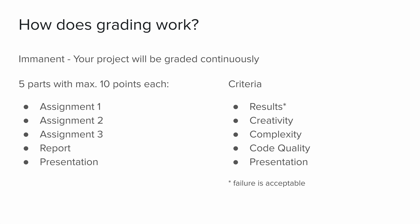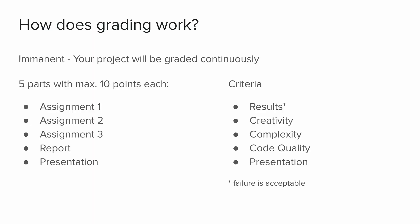How does grading work? This whole lecture is called an imminent lecture, which means your project is more or less your grade — you are continuously graded. There are five parts, as I mentioned: the three assignments, the report, and the presentation, each worth a maximum of 10 points, so you can get up to 50 points total. Given that we're in the computer science department, I will also look at complexity of the approach, code quality, and readability of your code when grading.